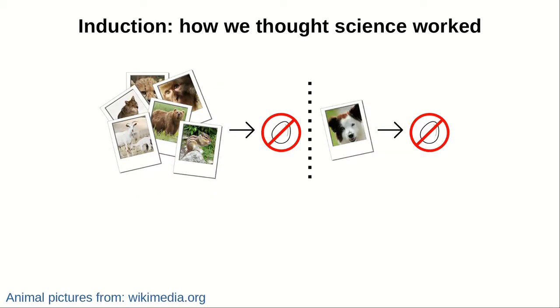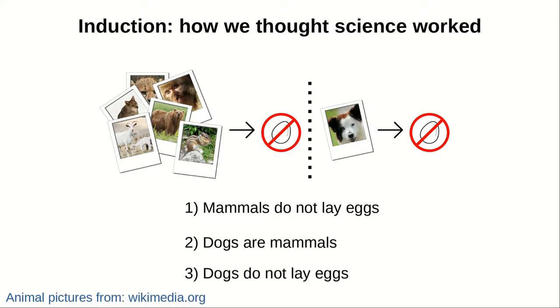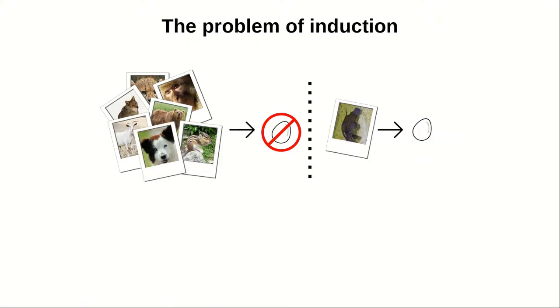Induction is how we thought science worked. Let's suppose you observed many mammals and mammals do not lay eggs, so then you conclude that all mammals do not lay eggs. Then you find a dog. Dogs are mammals, therefore you conclude that dogs do not lay eggs. And you're right. That's the principle of induction.